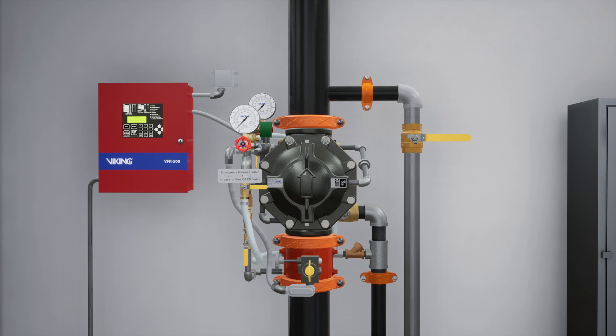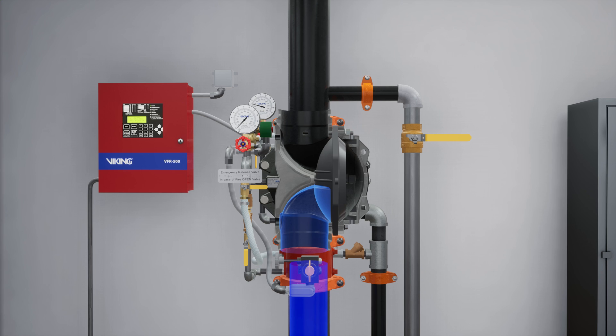The VXD Deluge valve is a flood valve with only one moving mechanism. The valve is held closed by priming water pressure trapped in the priming chamber. This keeps the outlet chamber and system piping empty.